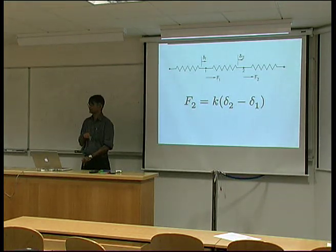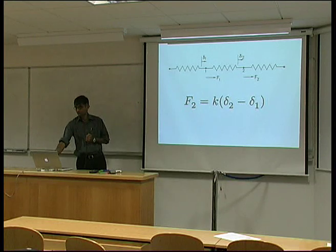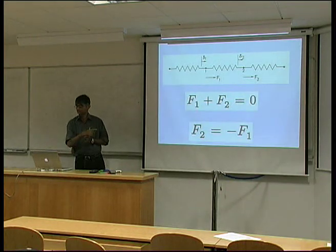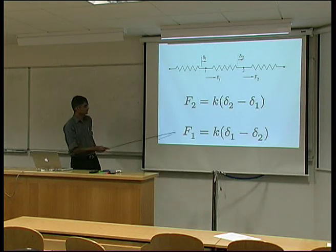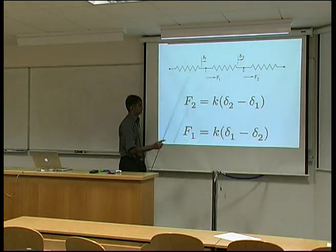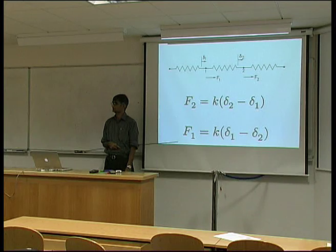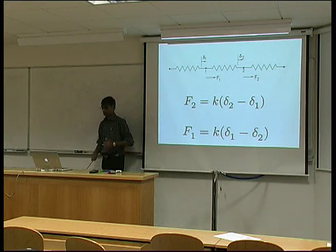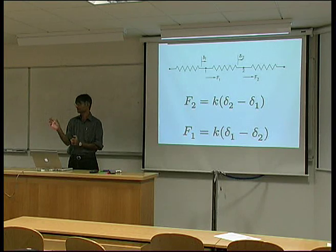What's the corresponding equation for F1? Because we decided that F2 is minus F1, therefore we get F1 equals k times (delta 1 minus delta 2). You can see that logically just by looking at the diagram — you don't need the equilibrium equation to decide that. So we've worked out the relationship between the forces and displacements for that element.